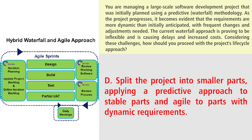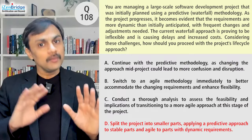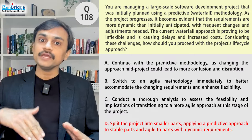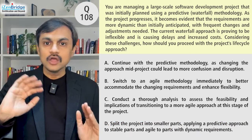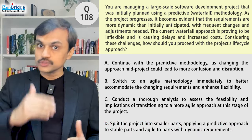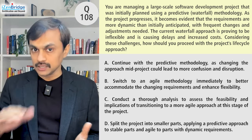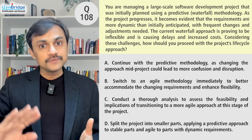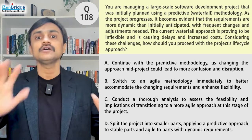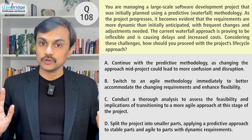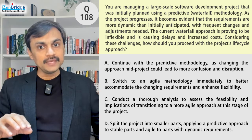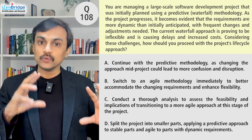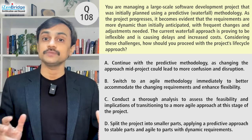Option D: split the project into smaller parts, apply a predictive approach to the stable parts and agile to the parts with dynamic requirements. This is possible, but if needed, it would be incorporated within option C. Option B — moving to agile — can also be a consequence of our analysis after option C. After option C, we may go for agile, a hybrid approach, or even continue with a predictive lifecycle. So options A, B, and D are all possibilities, but only after we analyze the situation in a bit more detail.